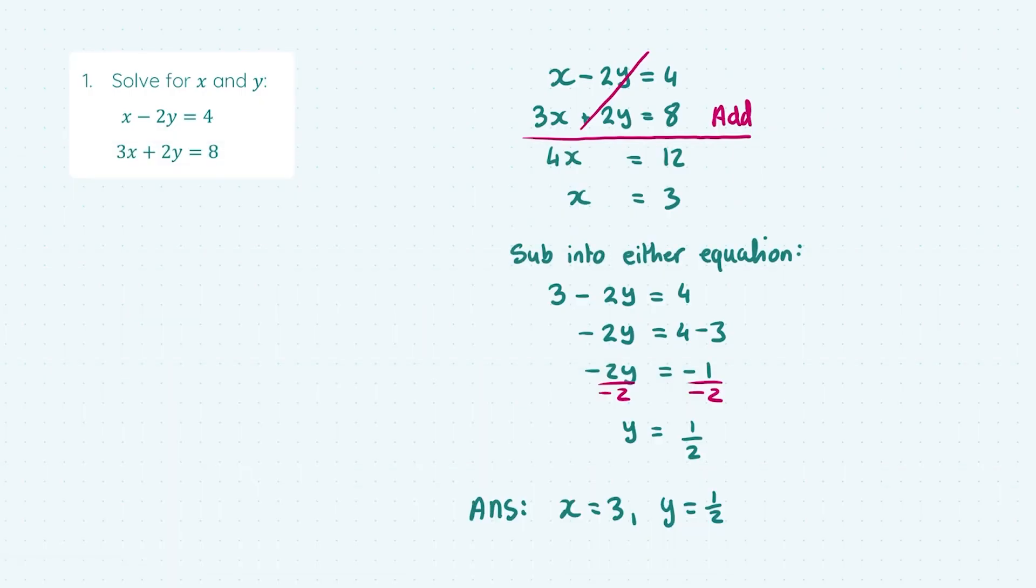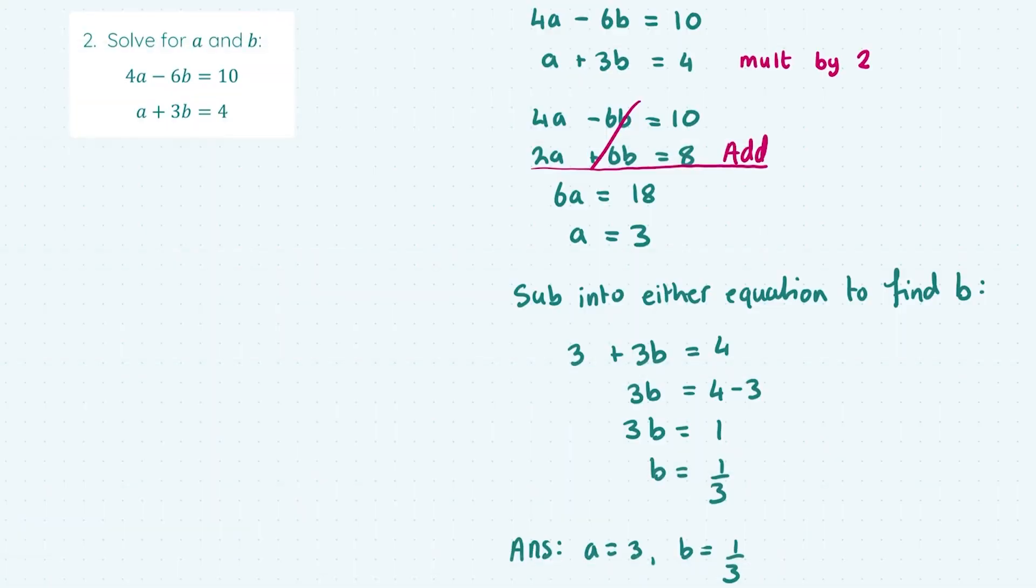In question one, the y's eliminated straight away so we could immediately solve for x and then sub back into either equation, doesn't matter which one, to find the other variable. Here in question two, to eliminate the b's, I had to multiply the second equation by two so that I could have a minus 6b and a 6b to eliminate. Doing so, we follow the normal method then for solving simultaneous equations.